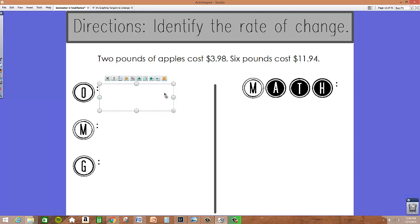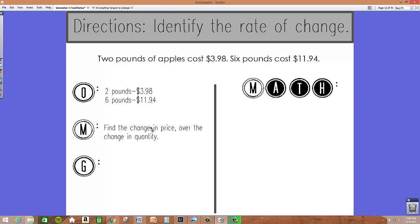So the first thing we write down that we observe is that two pounds goes with $3.98, six pounds goes with $11.94. Our mission to find the rate of change will be to find the change in price over the change in quantity.